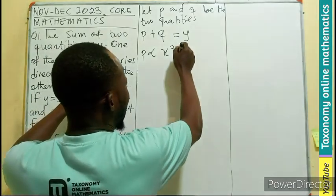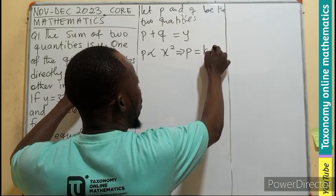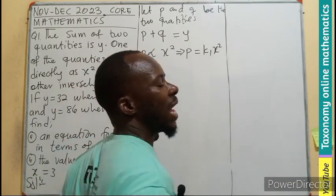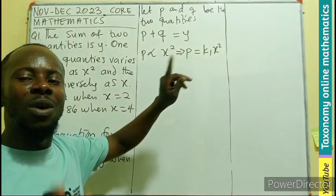So we can rewrite this into an equation whereby we can have K1, which is the constant of variation, multiplying X squared. So this is the first equation. So this is the equation for P.